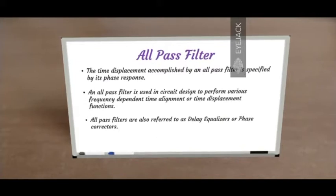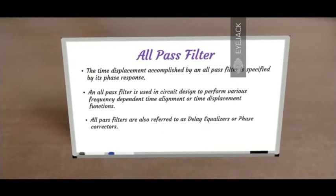The time displacement accomplished by an all-pass filter is specified by its phase response. One of the greatest uses of an all-pass filter is to perform various frequency-dependent time alignment or time displacement functions. We'll look at these applications in detail later in this video. Due to the nature of displacing functions in time, they're also referred to as delay equalizers, phase correctors, or sometimes even phase rotators.